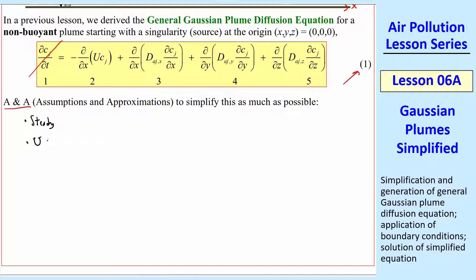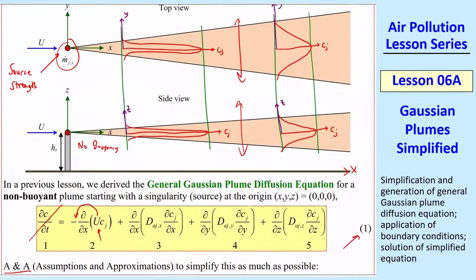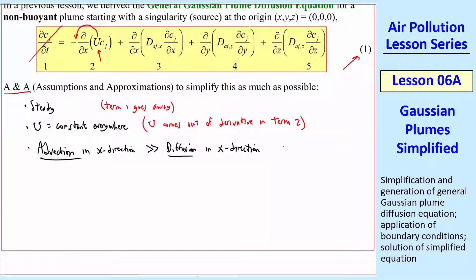The next assumption is that U is a constant everywhere, so we're going to ignore changes of the boundary layer and just assume a constant speed everywhere. Since U is a constant, it comes outside of the derivative. The third approximation is that advection in the x direction is much, much greater than diffusion in the x direction — the advection term dominates. Since there's a capital U and the plume is moving along, C changes very slowly. These plumes can span miles, and diffusion in x is very slow compared to advection. So diffusion term 3 in the x direction goes away because term 3 is much less than term 2.